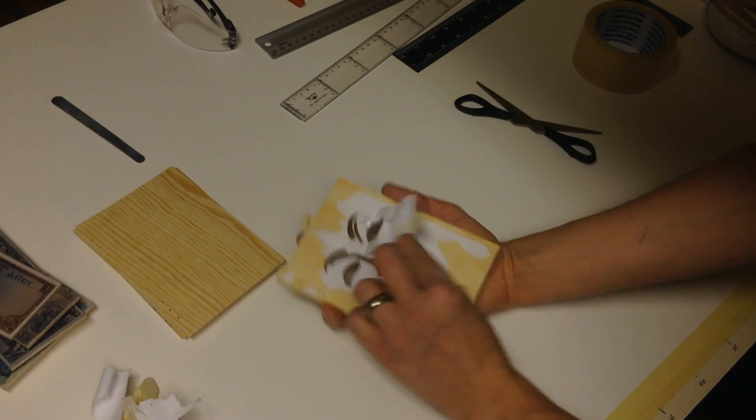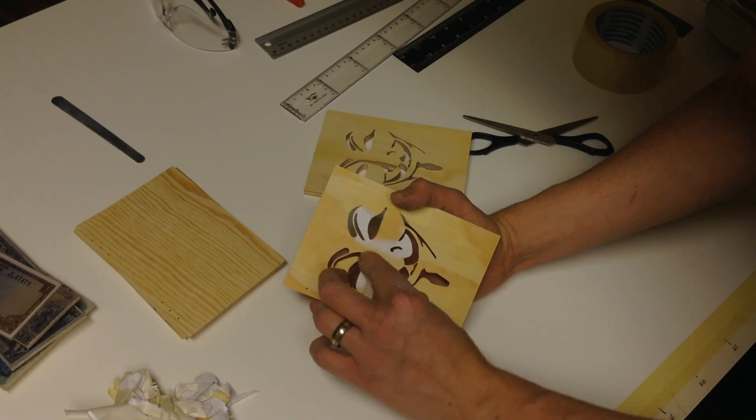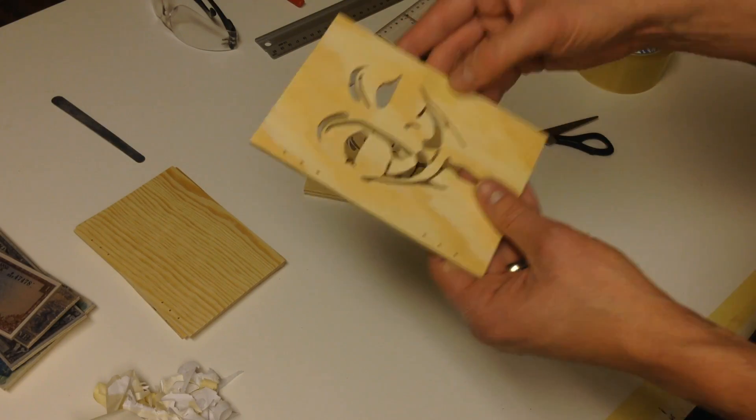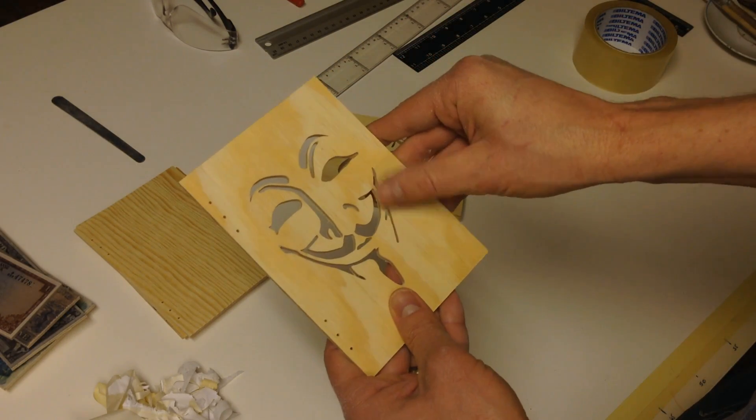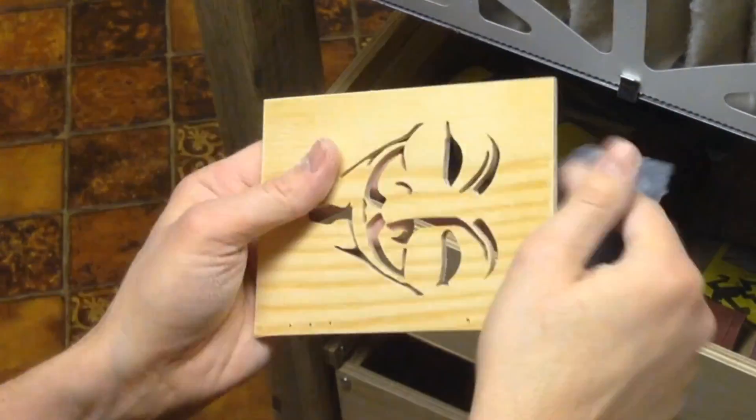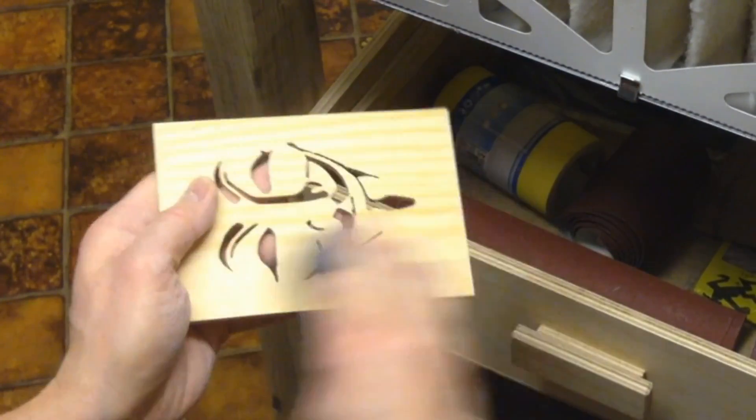Then the stack is taken apart and the pattern removed. All six covers are sanded up to 400 grit.